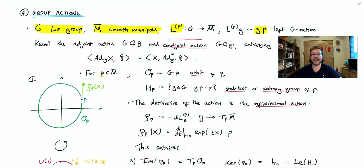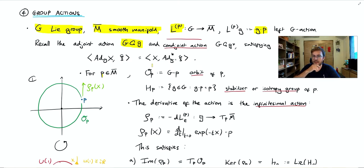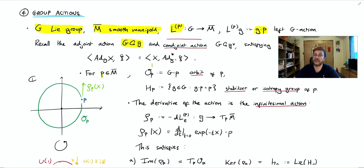We recall that the adjoint action is an action of our group on its Lie algebra, and that's essentially given by conjugation. If we conjugate the whole group by an element little g — so little g, capital G, little g inverse — then that will keep the identity fixed. So the derivative of that function will be an endomorphism of the tangent space at the identity, which is of course the Lie algebra.